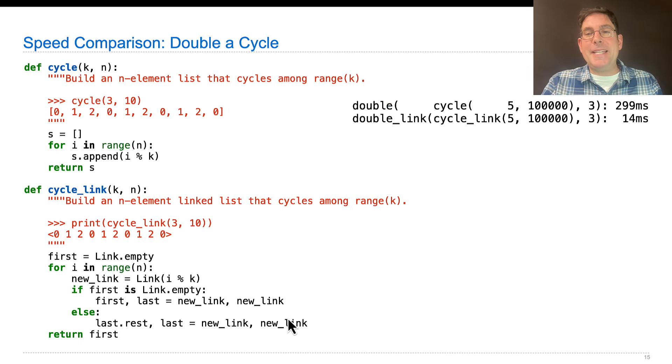Okay, now for the speed test. Doubling a cycle with a regular list that's 100,000 elements long, 0, 1, 2, 3, 4, 0, 1, 2, 3, 4, and we're duplicating all the 3s, so that's 20% of the elements are getting duplicated, took almost a third of a second, really long time. But with a linked list, it was much faster, only 14 milliseconds. Why?